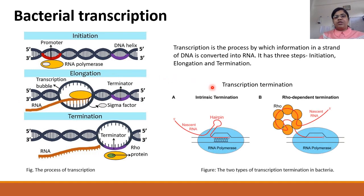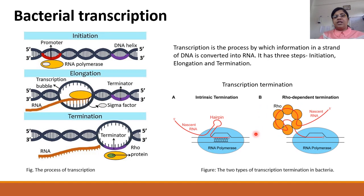The process of transcription termination is regulated in two ways. Intrinsic termination, where the forming RNA folds into secondary structures called hairpins, and rho-dependent termination, where a protein called rho forms hexameric units to stall the movement of RNA polymerase. I will be focusing on intrinsic termination in my talk.